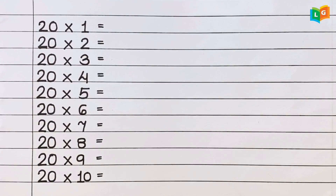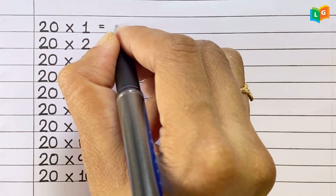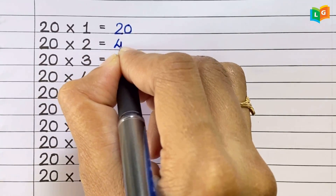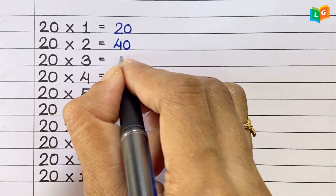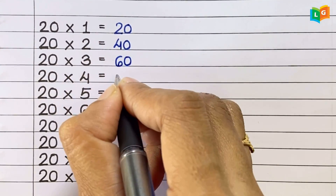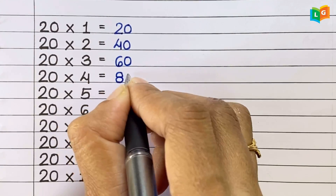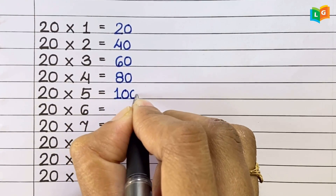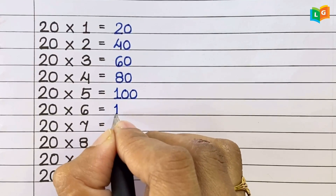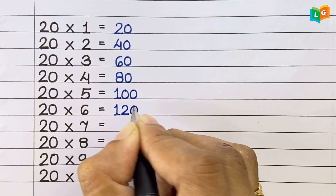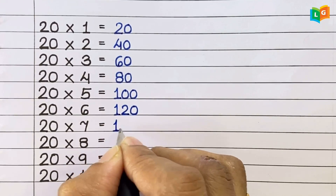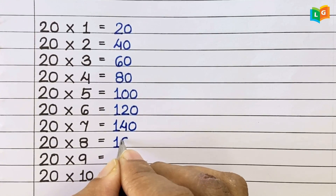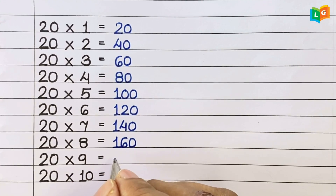Now let's see table of 20. 20 1s are 20, 20 2s are 40, 20 3s are 60, 20 4s are 80, 20 5s are 100, 20 6s are 120, 20 7s are 140, 20 8s are 160, 20 9s are 180, 20 10s are 200.